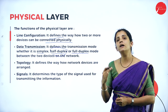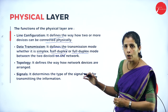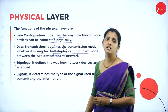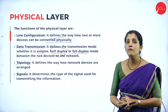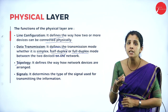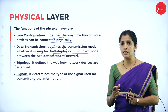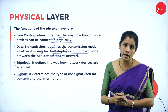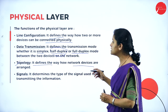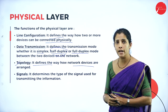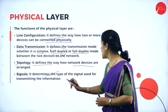In full duplex mode, it is two-way data transmission — sender and receiver can transmit data simultaneously. The physical layer also defines topology, which is the physical connection, arrangement, or geographical representation of computer systems — how devices are connected to each other. The last feature is signals: it determines the type of signals used for transmitting information, which may be analog (sine waves) or digital signals.